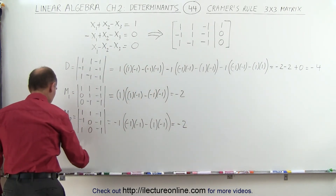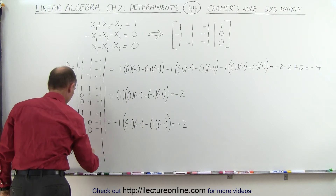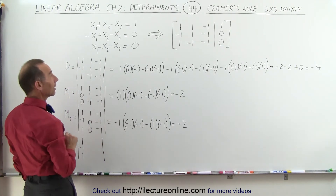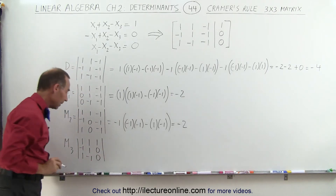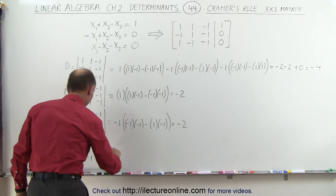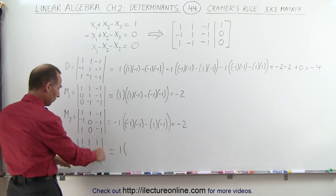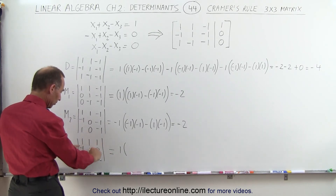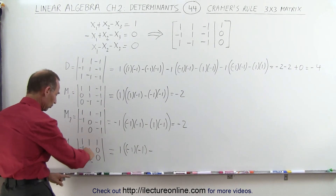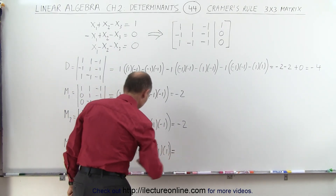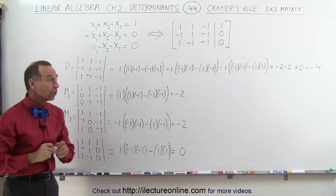For the third matrix M3, we replace the third column with the constants 1, 0, 0, while the first two columns stay the same: 1, negative 1; 1, 1; negative 1, negative 1. With two zeros in the third column, we only take the top element, 1, times the determinant of the remaining 2x2: negative 1 times negative 1 minus 1 times 1, which is 1 minus 1 equals 0. Those are the determinants of all three matrices.